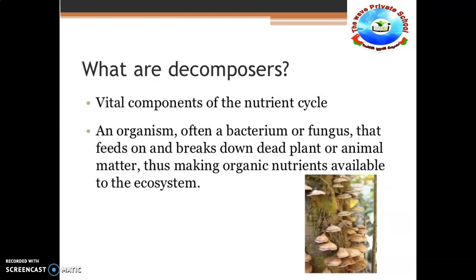Up to now we have learned about organisms and types of organisms — for example, carnivores, herbivores, and decomposers. When studying an ecosystem, we have to know that decomposers are a very important group of organisms. What are decomposers, and what role do they play in the ecosystem? Decomposers are vital components of the nutrient cycle.